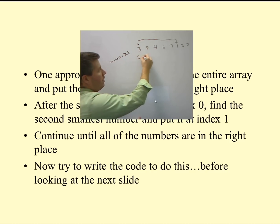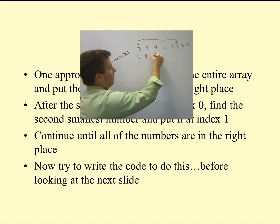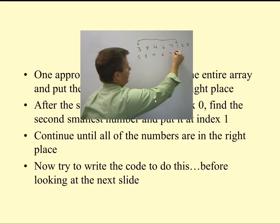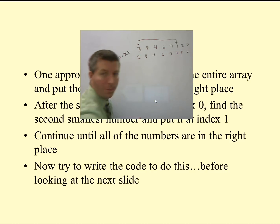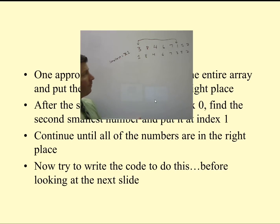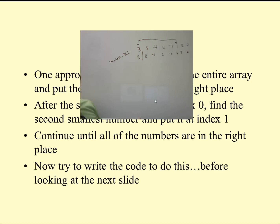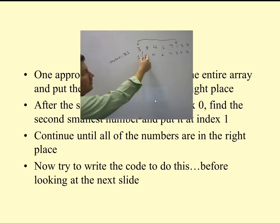So we get 1, 8, 4, 6, 7, 3, 5, 2. We now have one number in the right place. So now we're going to do it again, starting from the next number.